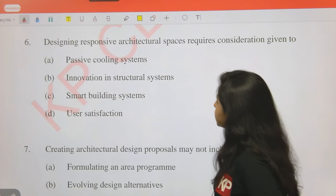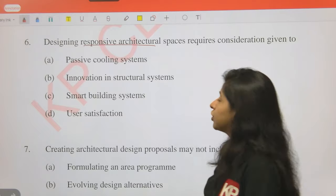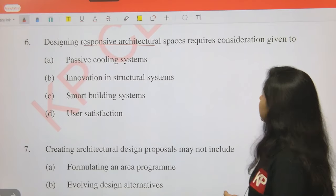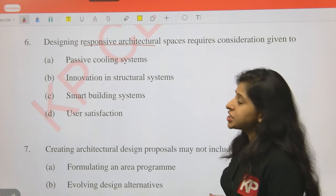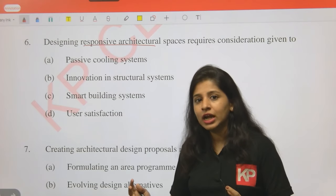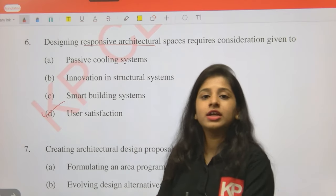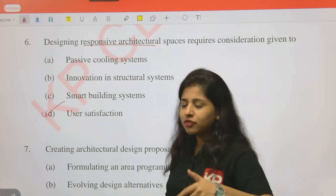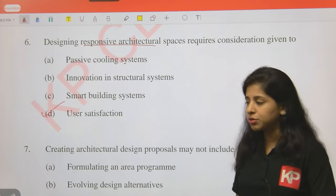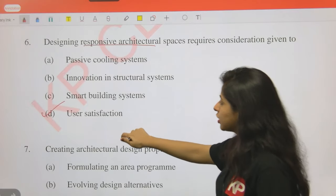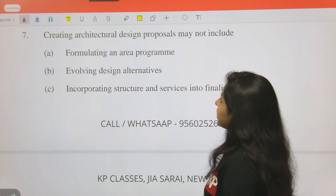Question 6: Designing responsive architectural spaces requires consideration given to passive cooling systems, innovation in structure systems, smart building systems, or user satisfaction? When designing a responsive space - a building that responds to user needs - the most important consideration is user satisfaction. No matter how innovative the building is, if it doesn't properly respond to the user's requirements, it is not a truly responsive design.